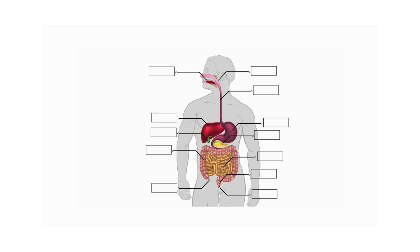The first organ is our mouth. Digestion starts from the mouth because the teeth are present in the mouth and the teeth break food into small particles. In the mouth, glands are present which we call the salivary gland.